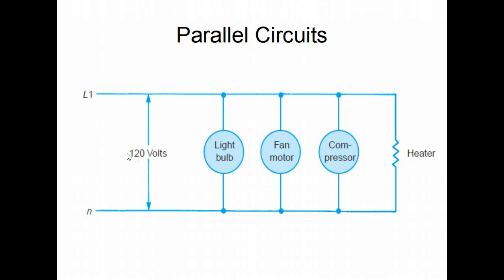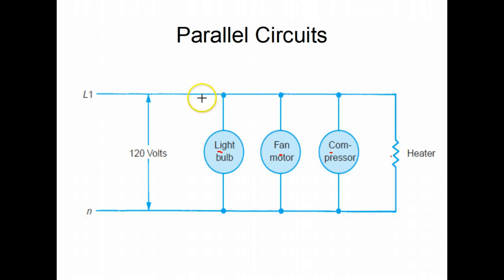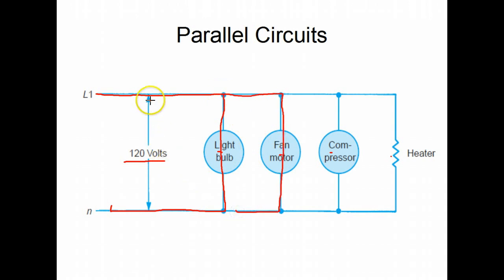Parallel circuits. Here's a basic parallel circuit — as you'll notice, we don't have any switches in it at this point. Parallel circuits are used for loads. The reason we have to have our loads in parallel is that each one of these loads — the light bulb, the fan motor, the compressor, and the heater — need 120 volts to operate properly. When you have a parallel circuit, you have a complete path to flow through the light bulb at 120 volts, through the fan motor at 120 volts, and the same with the compressor and the heater.